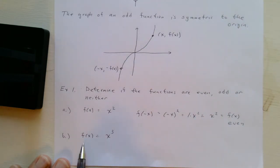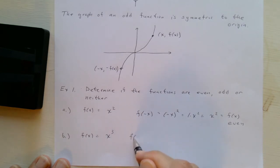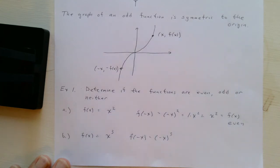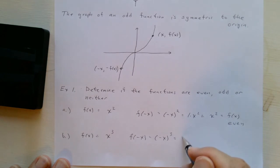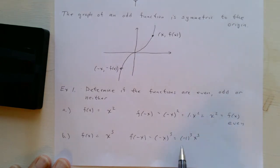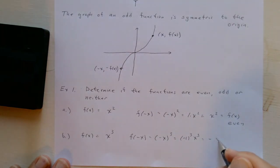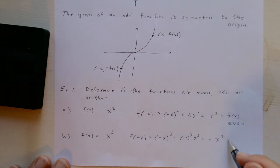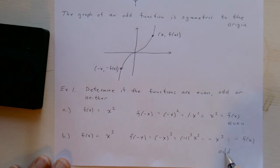If f(x) = x³, then f(−x) = (−x)³ = (−1)³ · x³ = −x³, which equals −f(x). So this function is odd.